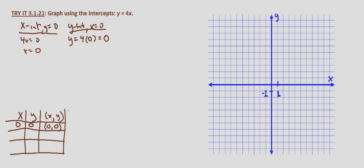Now we simply need to pick two other points. We can use an input or an output. In this case it makes more sense to use an input. So we'll use, let's say, x equals negative 2. If x equals negative 2, y equals 4 times negative 2, which equals negative 8. So x equals negative 2, y equals negative 8. That gives us the point negative 2, negative 8.